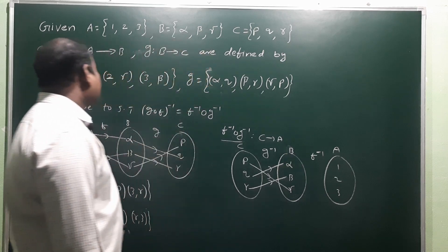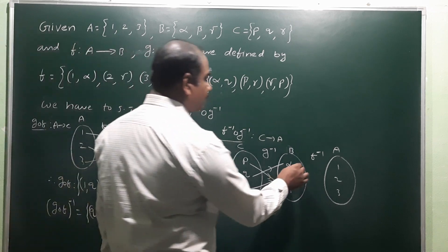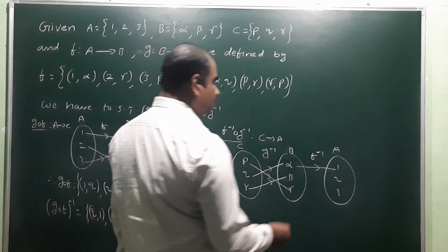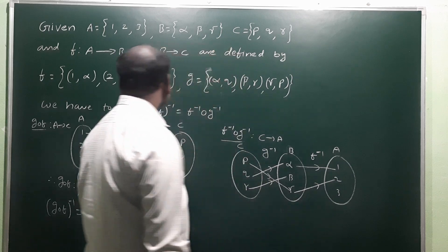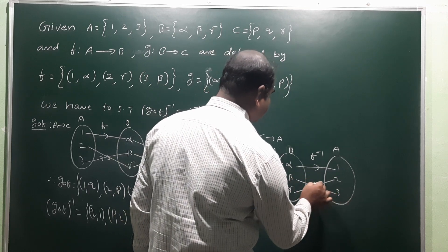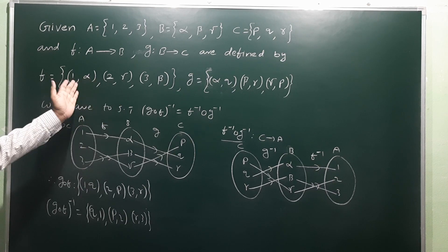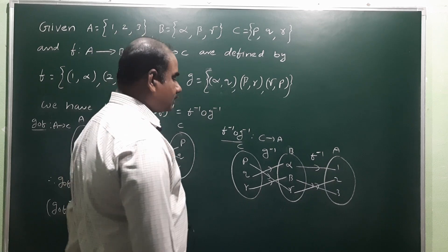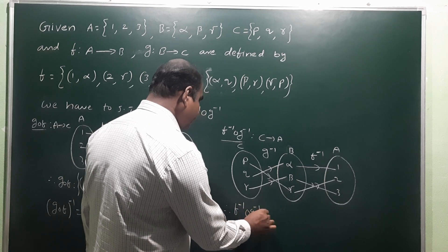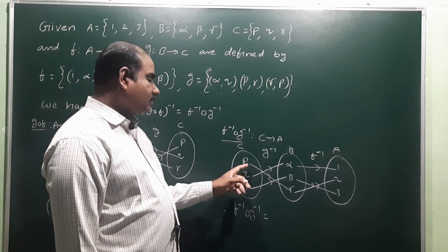f⁻¹: since f = {(1,alpha),(2,gamma),(3,beta)}, f⁻¹ = {(alpha,1),(gamma,2),(beta,3)}. So alpha goes to 1, gamma goes to 2, beta goes to 3. Therefore f⁻¹ ∘ g⁻¹ is a function from C to A. Taking first element: p goes to gamma (via g⁻¹), gamma goes to 2 (via f⁻¹), so p maps to 2.